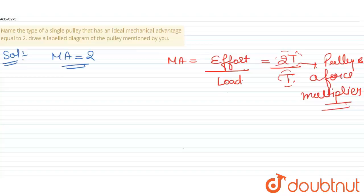So such type of pulley which has mechanical advantage two, or we can say the pulley that doubles the force, is a single movable pulley. A single movable pulley is a pulley with mechanical advantage two, or we can say a force multiplier pulley.